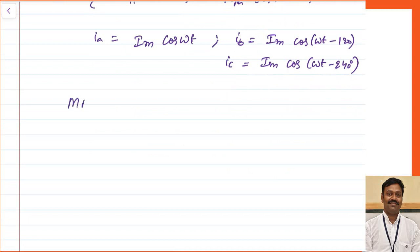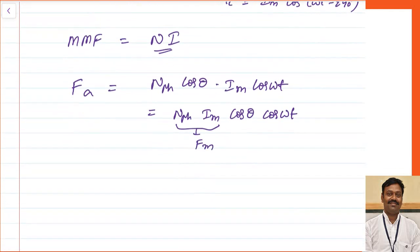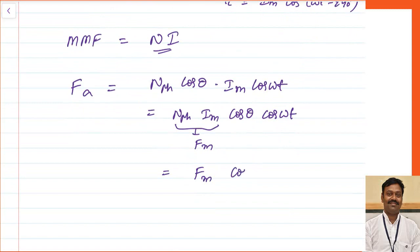The magnetomotive force (MMF) is equal to the number of turns into the current passing through them: F = N × I. So for phase A, Fa = n_phase × cos(θ) × I_max × cos(ωt). Taking n_phase × I_max as the maximum value of MMF (Fm), this becomes Fa = Fm × cos(θ) × cos(ωt).